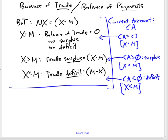This is all a bit strange terminologically. If it helps you, you can just think of current account as the same thing as net exports — X minus M. If X minus M is a positive number, that is the size of the trade surplus or current account surplus. If X equals M, there's no surplus and the balance of trade balances. If imports are greater than exports, there is a trade deficit and the current account is negative.